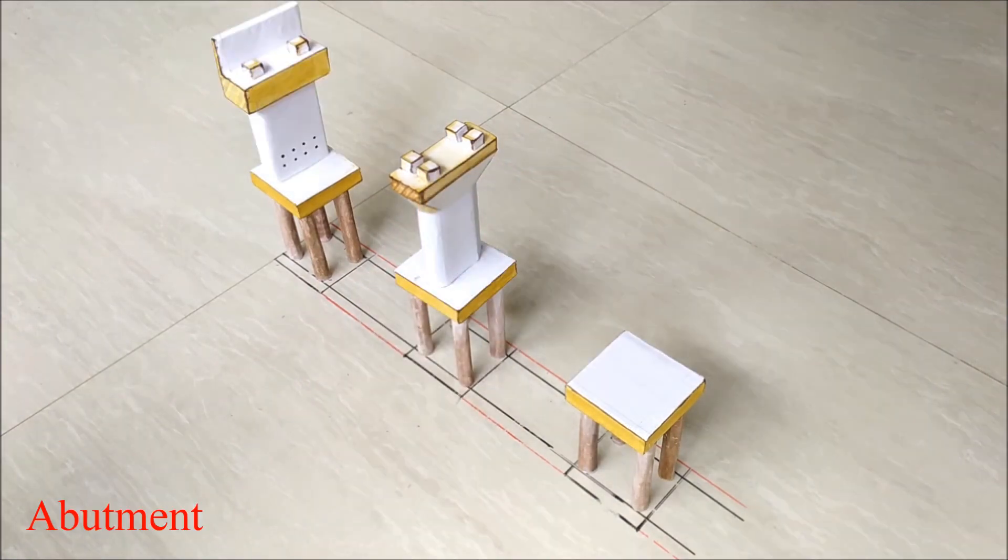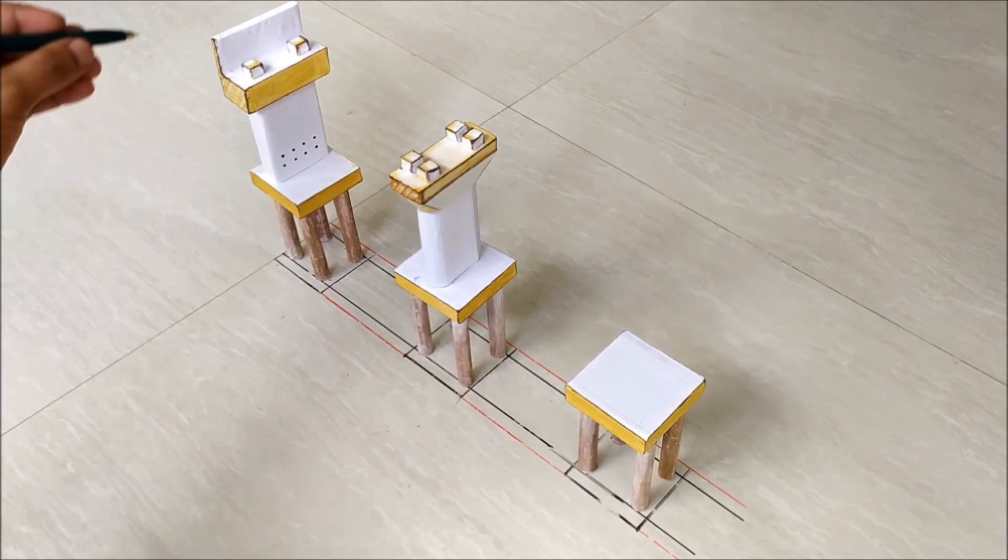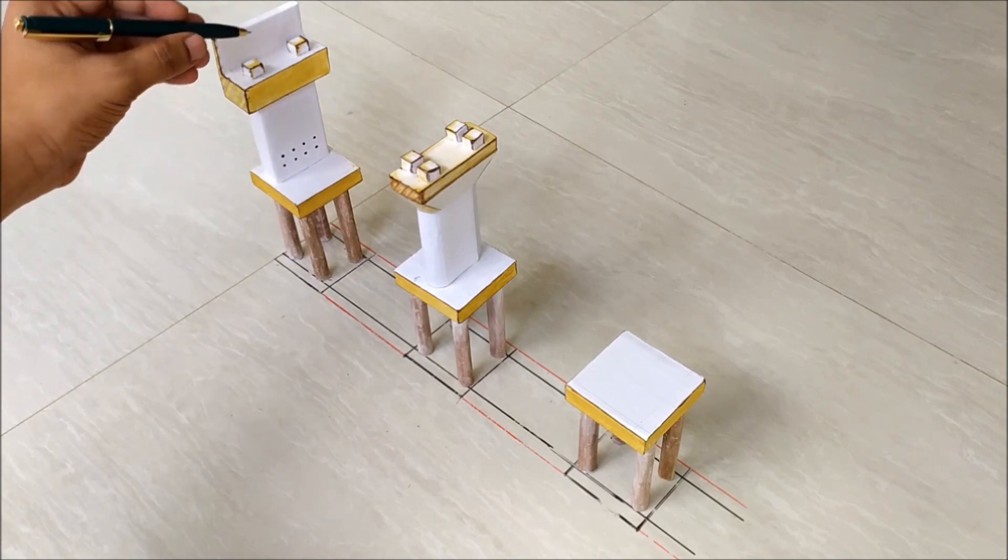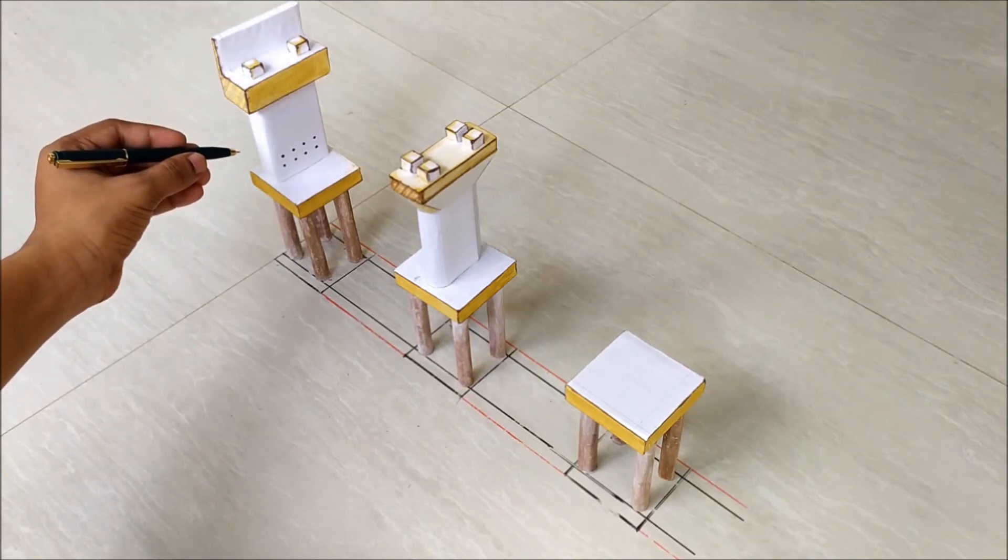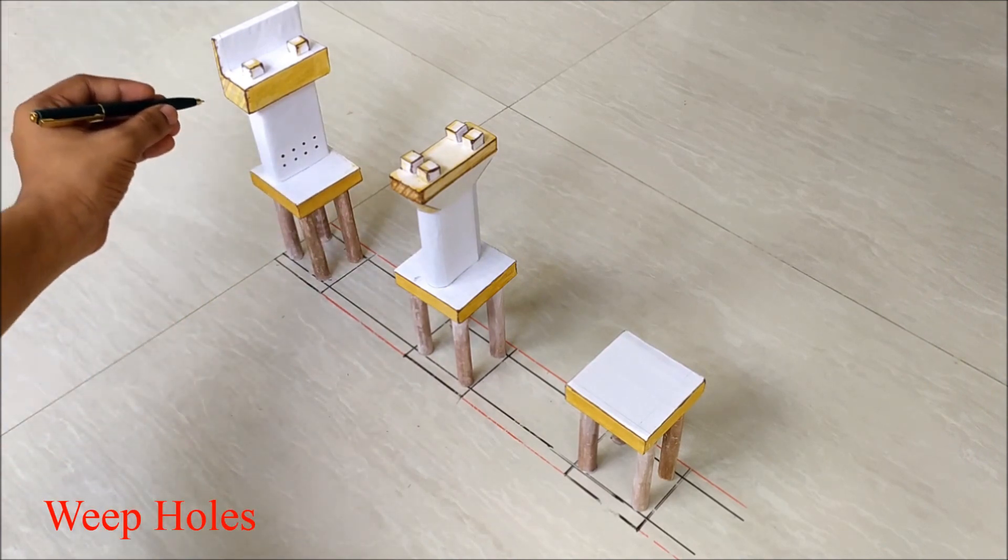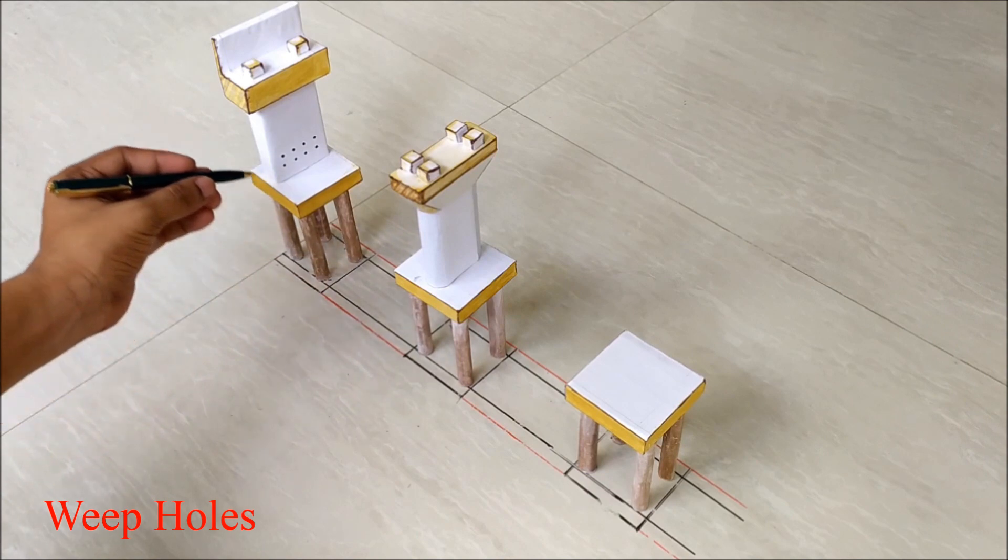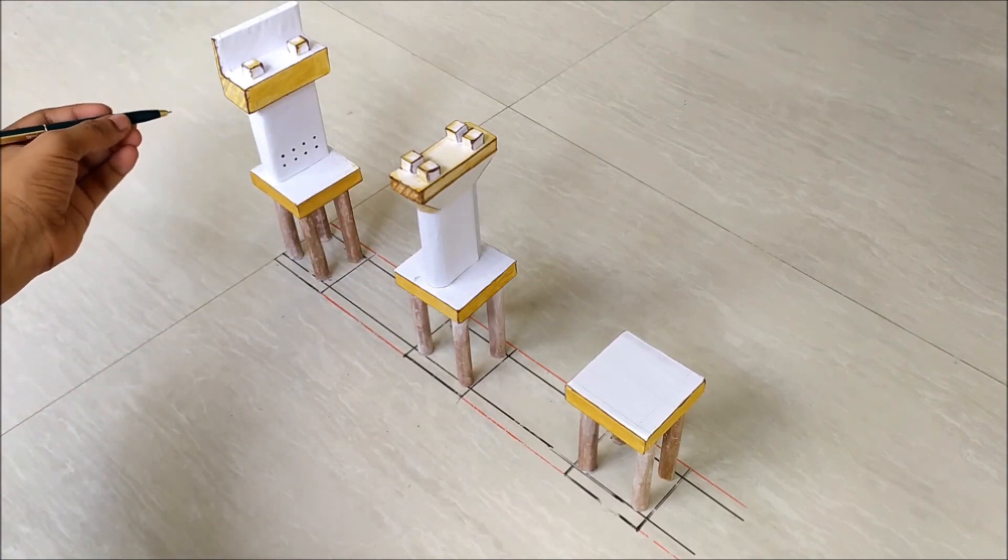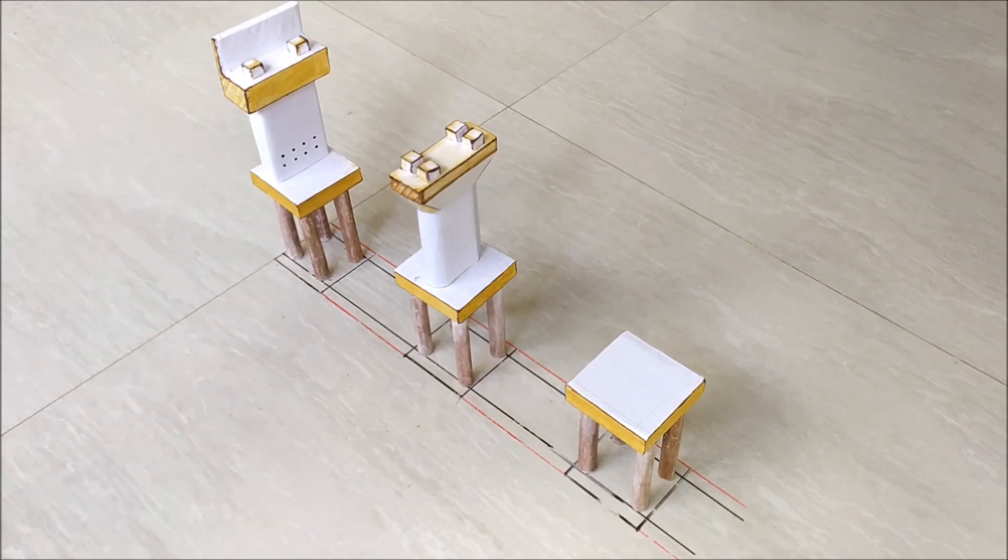This is the model of a wall type abutment. Abutment is a substructure component that supports the end of superstructure and transfers the loads from superstructure to pile cap. These are the weep holes in abutment that allow the water of backfill soil to flow through it, which reduces the hydrostatic pressure of backfill material. This process ultimately decreases the earth pressure of backfill retained by abutment.